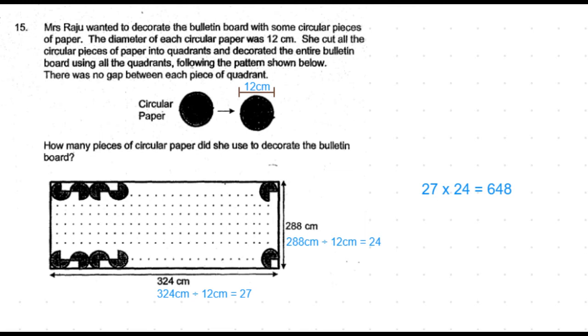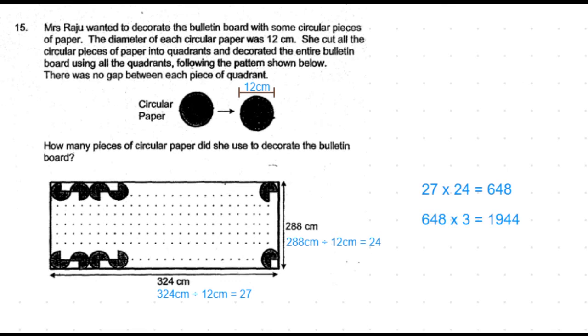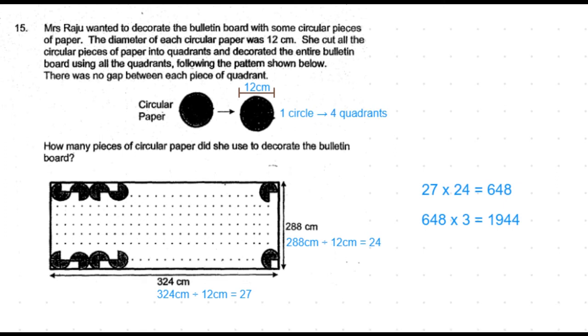That is a total of 648 quadrants used. So, that is a total of 648 times 3 that is equal to 4 quadrants.